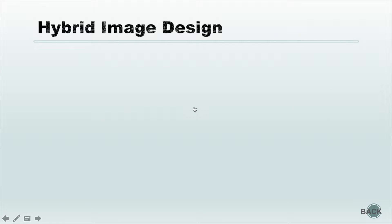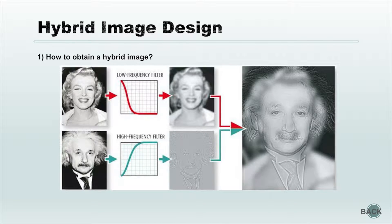Next, let us explore how to obtain a hybrid image. As mentioned above, a hybrid image combines the low spatial frequency of one image with the high spatial frequency of another. Let the image of Monroe pass through the low-frequency filter to get a blurred image, and let the image of Einstein pass through the high-frequency filter to get an image with fine lines. Then, by simply adding these two images together, we can obtain the final hybrid image.